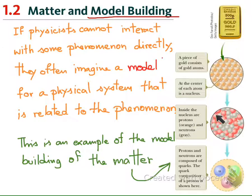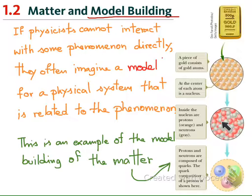Next, we question what the atom consists of. We know that the atom consists of the electron and the nucleus. Again, we question what the nucleus consists of, and we know that the nucleus consists of protons and neutrons. And we know today that it further consists of quarks — very elementary particles. This is the model of matter. We cannot see it directly by eye, but we can imagine, create the model mathematically, and compare the result with experiment. That is what physicists do in their work.